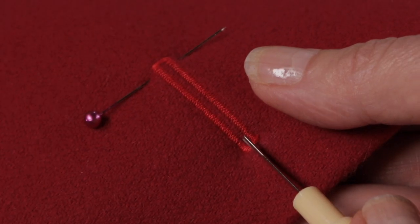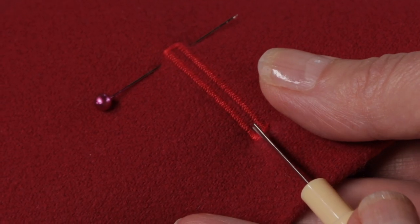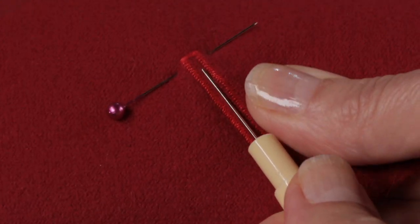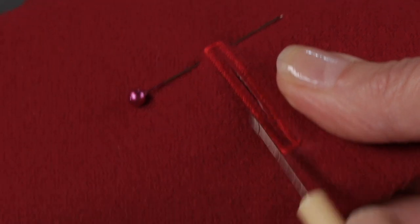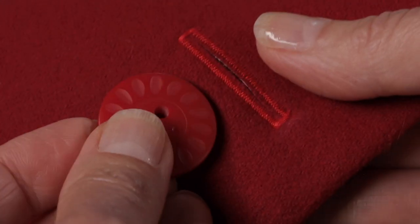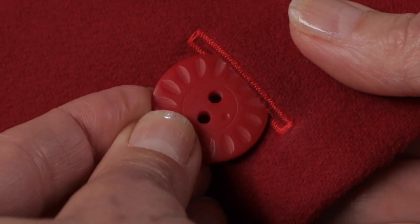Place the tip of your seam ripper into the end of the buttonhole and carefully guide it up the middle until you come all the way across. Remove the pin, and there you have a perfectly sized buttonhole for your button.